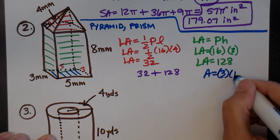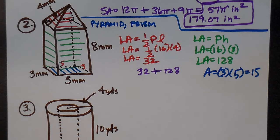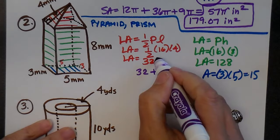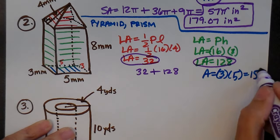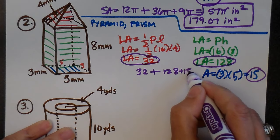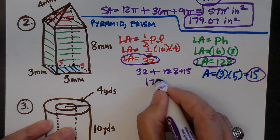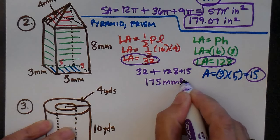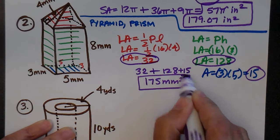I still need to add the bottom base, which is a 3 by 5 rectangle, so that's 15. Adding everything together: 32 (pyramid lateral) plus 128 (prism lateral) plus 15 (bottom base) equals 175 square millimeters. That is your composite surface area.